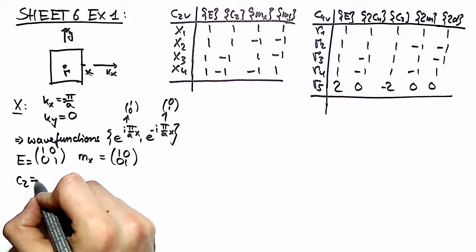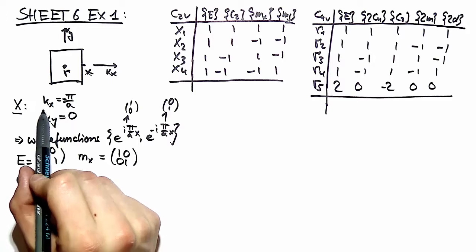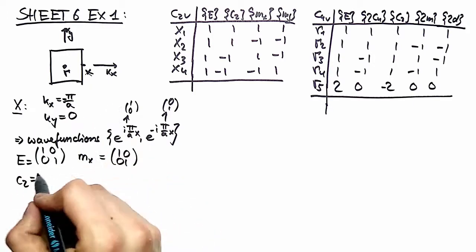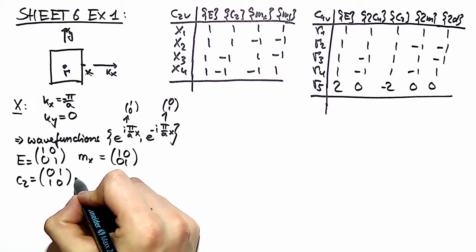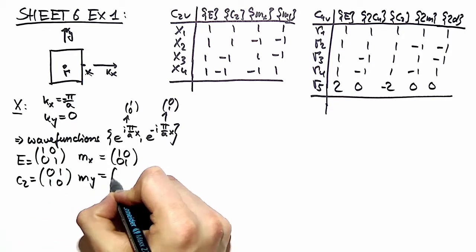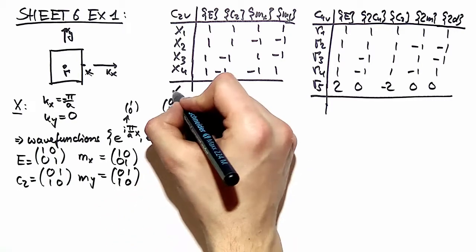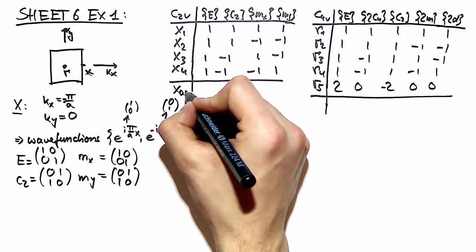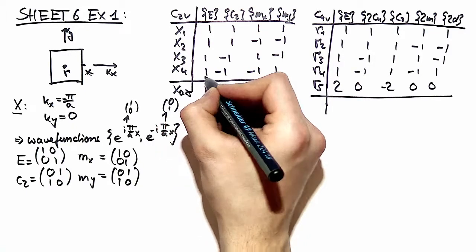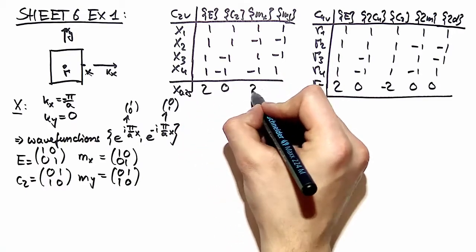Rotating by 180 degrees yields k to minus k and therefore our basis vectors just switch partners. Same is true for the mirror plane in y direction. Therefore our representation X(0.25) gives us characters here: 2, 0, 2, 0.